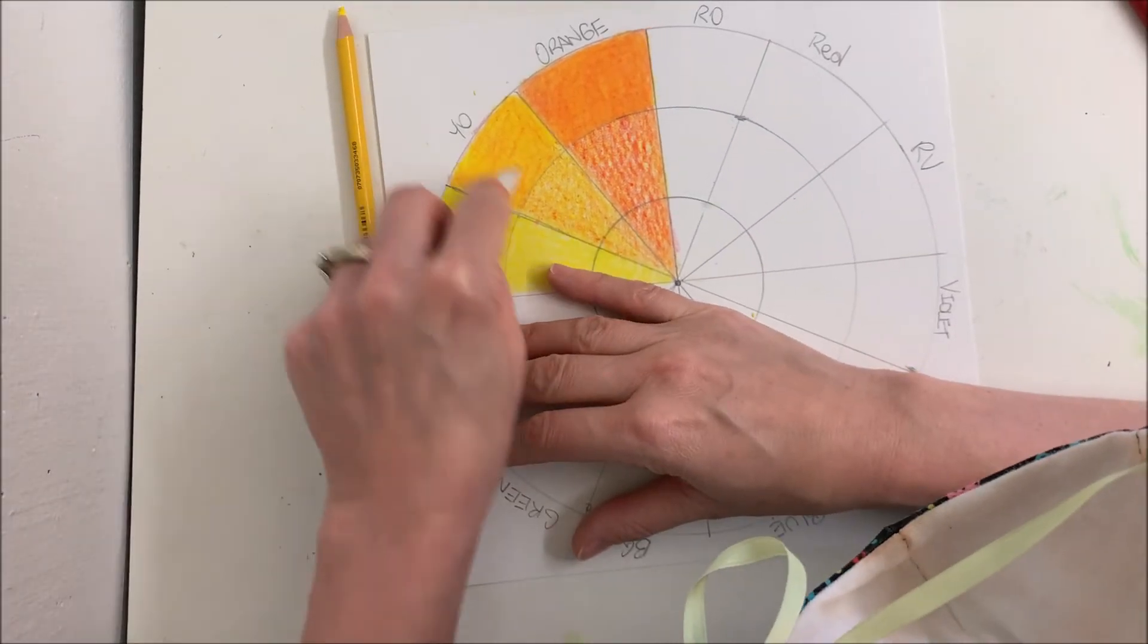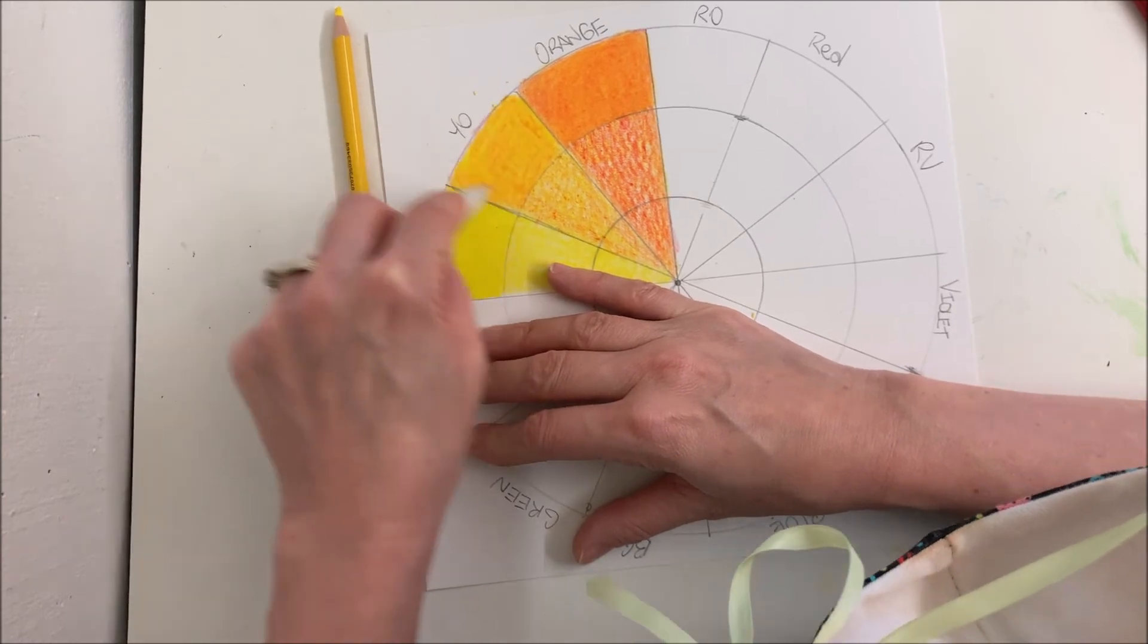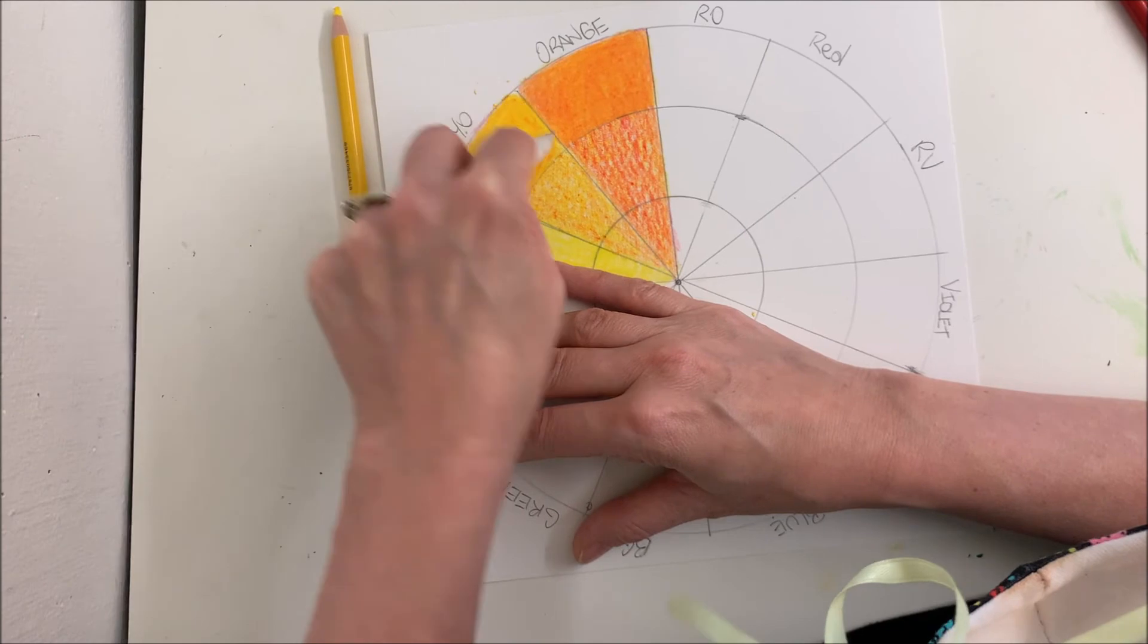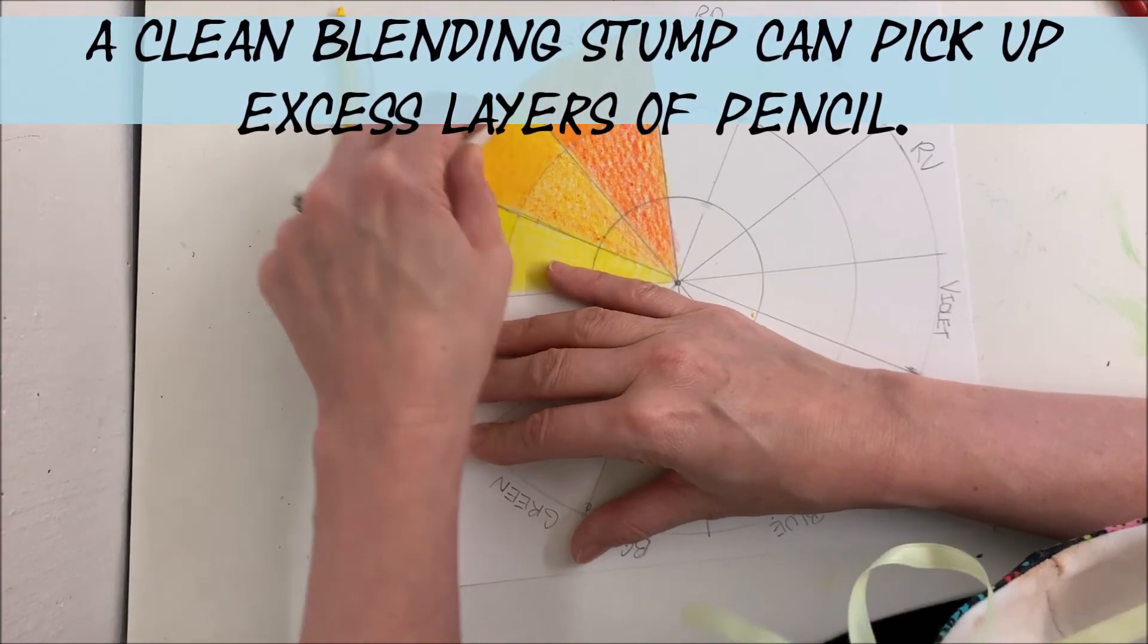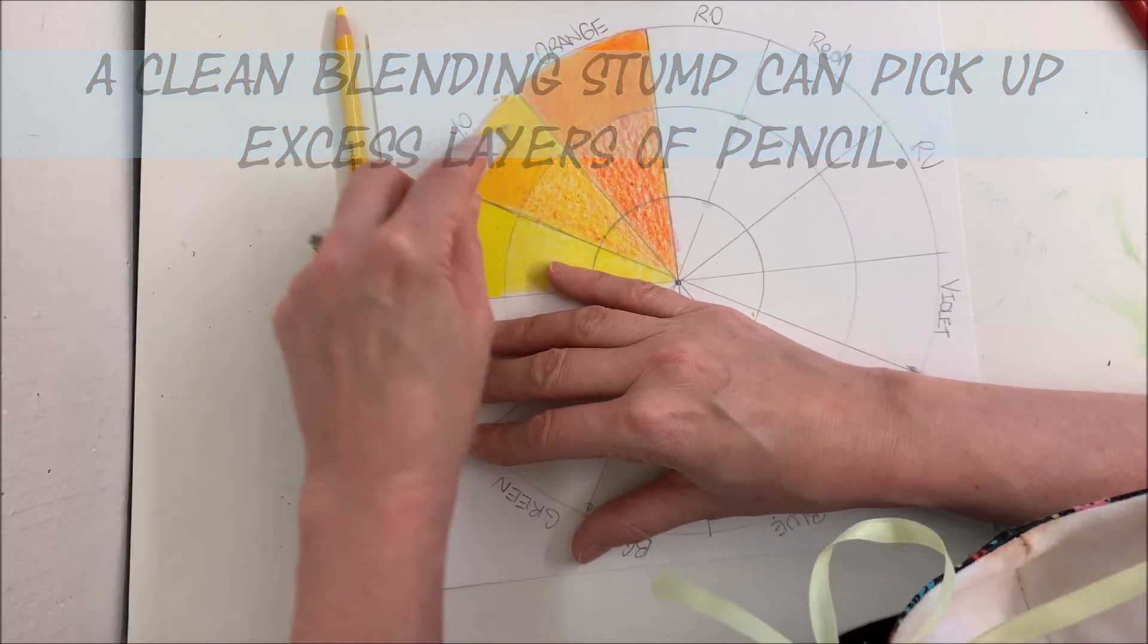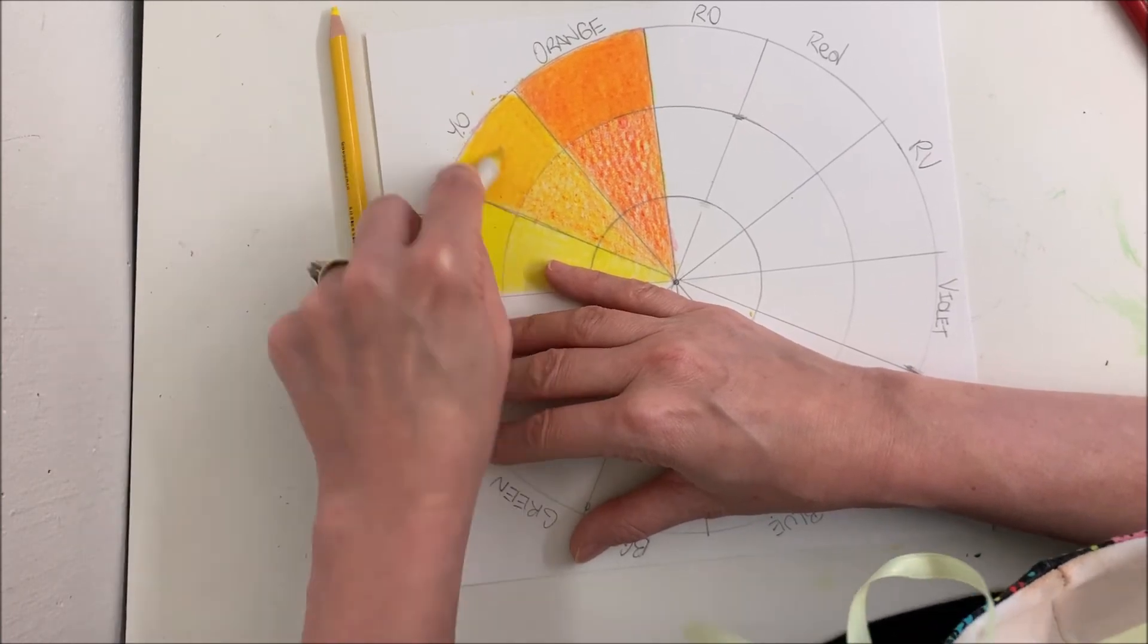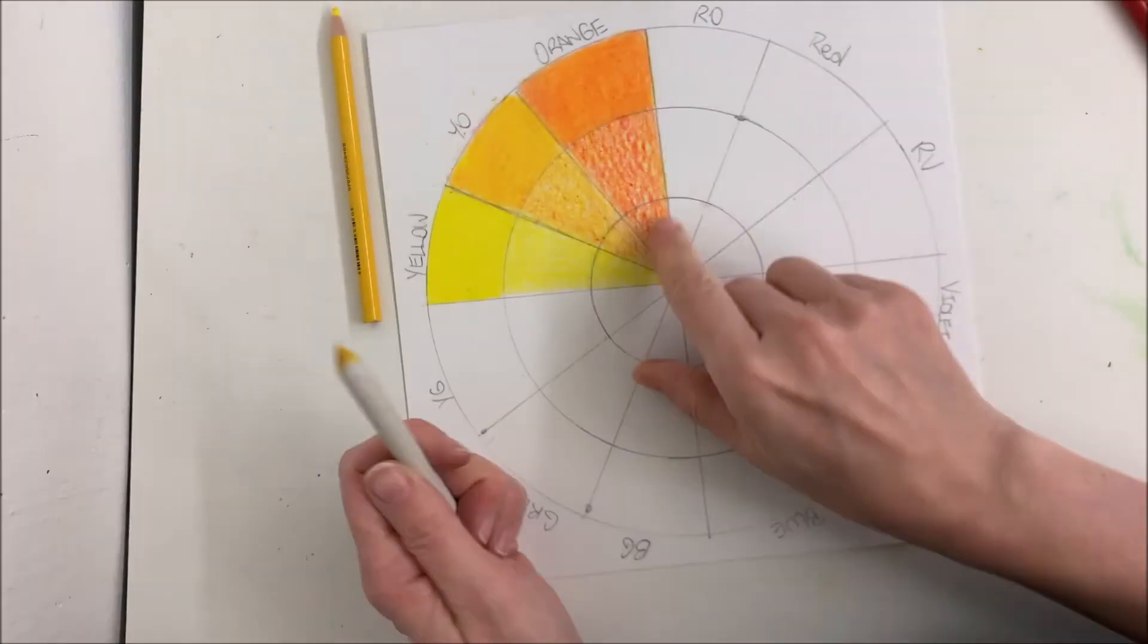You can use your blending stump. If you see any areas that look like they're too chunky, you can use your blending stump to help pick those areas up. I'm rolling my blending stump as I'm doing this. And what it's doing is it's picking up some of that excess red, but it'll only work if I have a clean section of the blending stump. So what that's done is it's picked up the wax and put it on the blending stump.